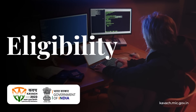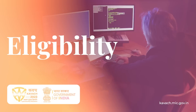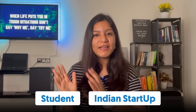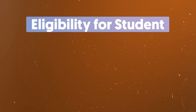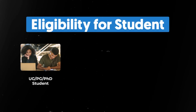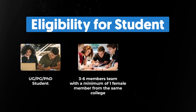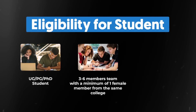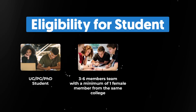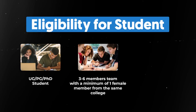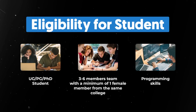The next part is eligibility. There are three criteria. First, either you are a student or you are a registered startup in India. If you are a student, you can be an undergraduate, postgraduate, or PhD student. The second criteria is your team — you should have a minimum of 3 members and a maximum of 6 members, with at least one female candidate required, and all of them should be from the same college. The final criteria is related to your programming background.